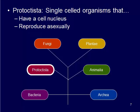The next kingdom, protista, are also single-celled organisms. They do have a cell nucleus, which is what makes them different from the bacteria and archaea kingdoms, and they also reproduce asexually. Most of these are going to be microscopic as well, though some of them can be a bit larger.